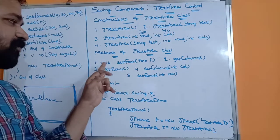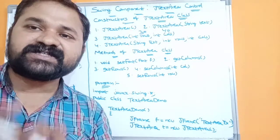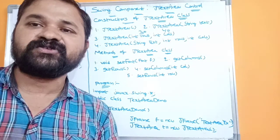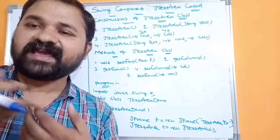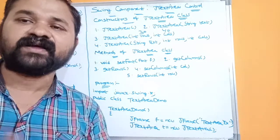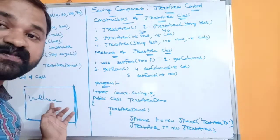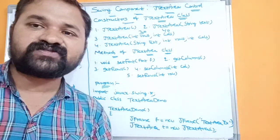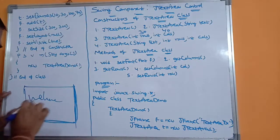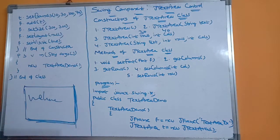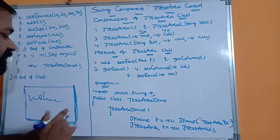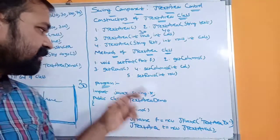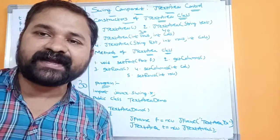The first method is void setFont(Font f), which is useful to specify the font. There are several font styles like Times New Roman, Arial, Sans Serif, and so on. The second method, getColumns(), returns the number of columns in the multiline text box — for example, if the text box was created with 30 columns, getColumns() returns 30. The third method, getRows(), returns the number of rows of the text area control.